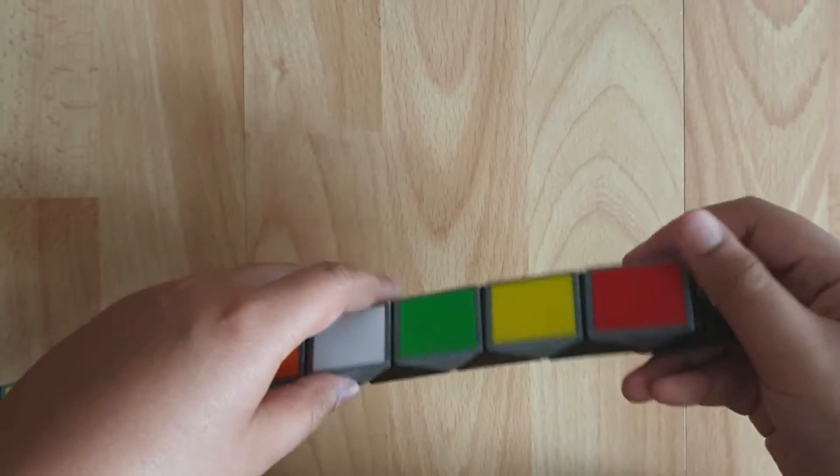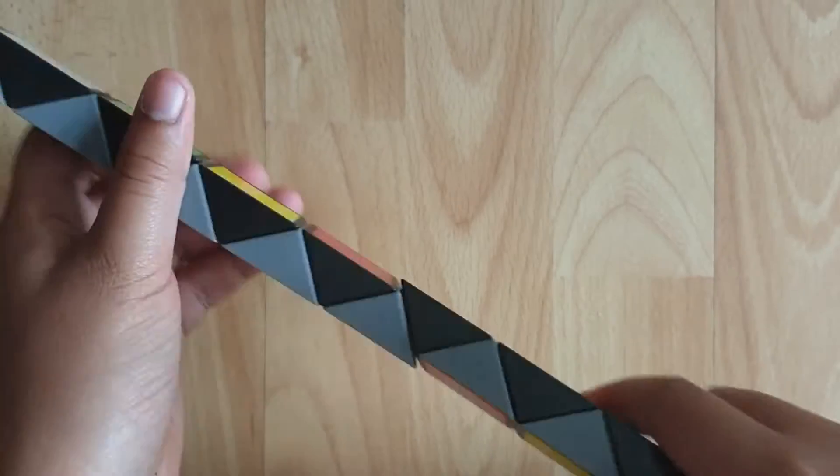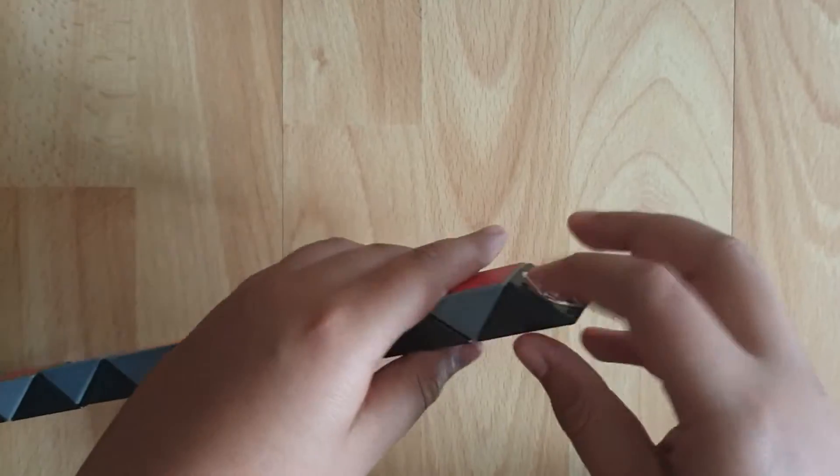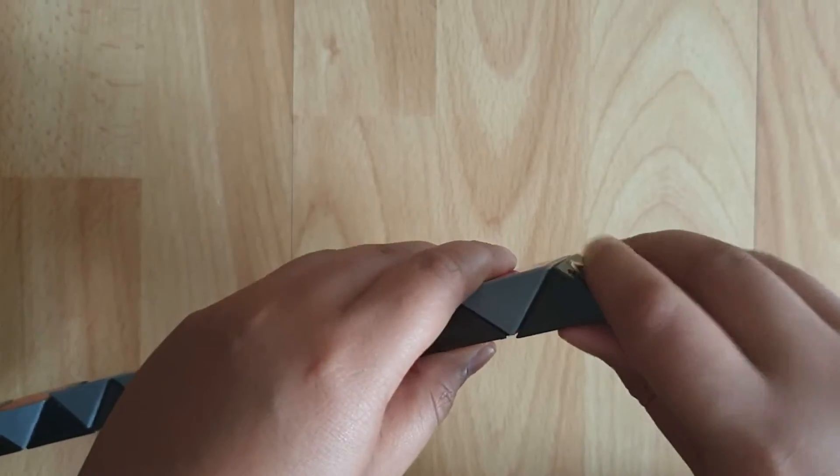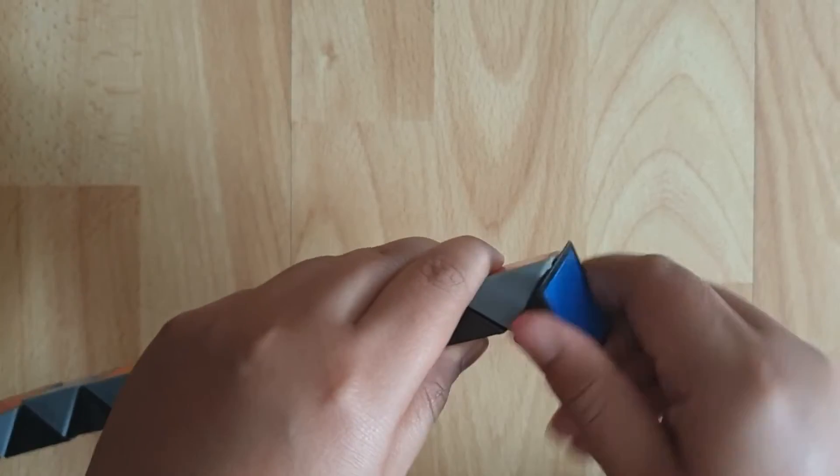The first thing you have to do is you can hold it anywhere. So just get the end, the very end piece and turn that, and turn it two times, so one and then two.